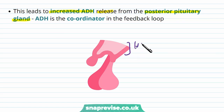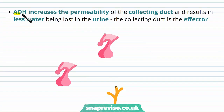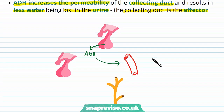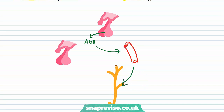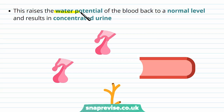Once the osmoreceptors detect a drop in water potential, they trigger the cells of the posterior pituitary gland to release ADH into the blood. The osmoreceptors are the detectors, and ADH is the co-ordinator in this feedback loop. ADH increases the permeability of the collecting duct, resulting in less water being lost in urine and more being reabsorbed — the collecting duct is the effector. ADH travels via the blood to the nephron, where it acts on its receptors, causing increased aquaporins to be recruited to the membranes, and water leaves the filtrate into the medulla to be reabsorbed into the blood, raising water potential back to normal and producing concentrated urine.